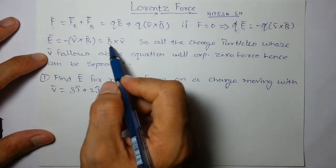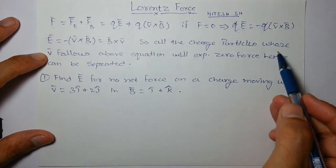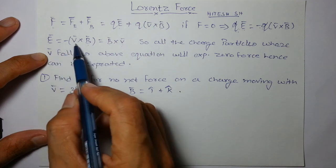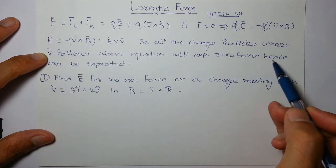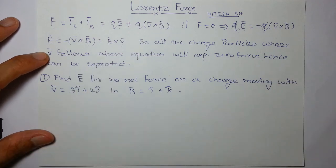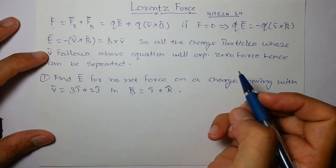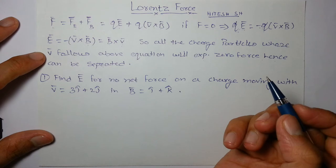Okay, so just taking the property of cross product, we can say this. So all the particles who follow this expression will experience zero net force. Hence, they will not be deviated or they are not accelerated at all. So they can be separated from a crowd of particles because they will not be accelerated.